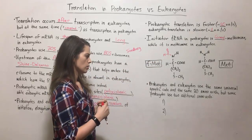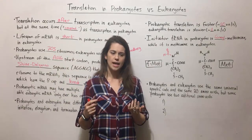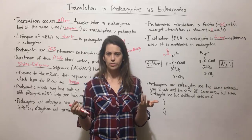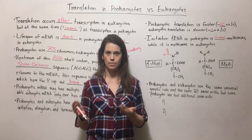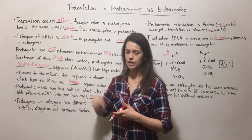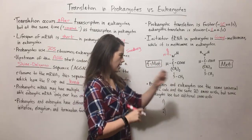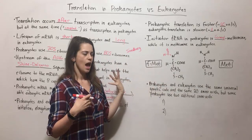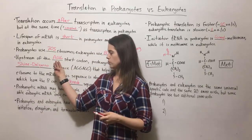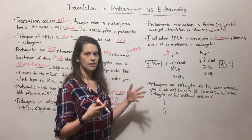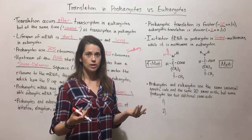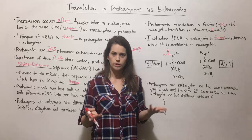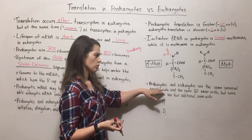Prokaryotes and eukaryotes also use the same universal genetic code. In mRNA there are codons — sets of three non-overlapping nucleotides that code for specific amino acids. For example, the start codon AUG always codes for methionine. The code is the same in prokaryotes and eukaryotes. That's why you can take a gene from a human — like for human insulin — put it into a bacterium, and the bacterium can make a protein identical to what human cells make, because we all use that same universal genetic code.